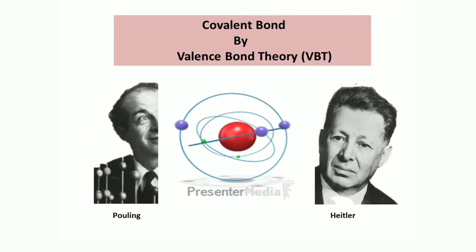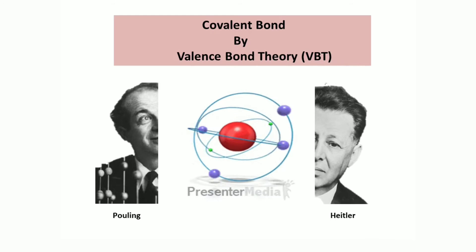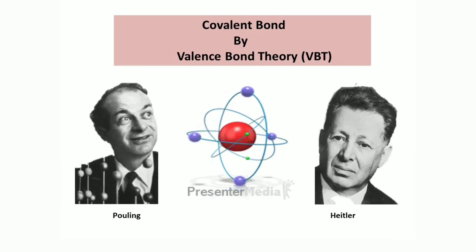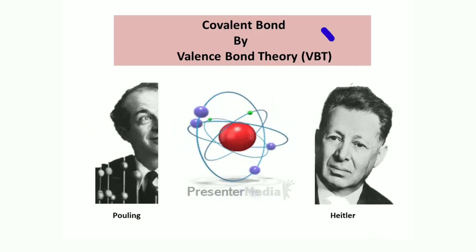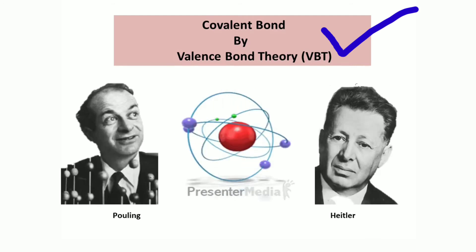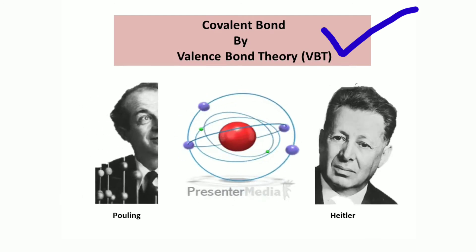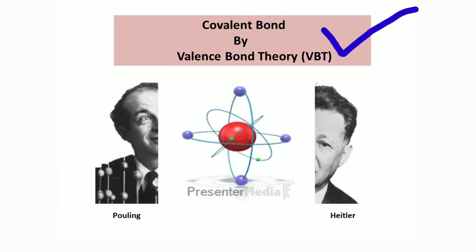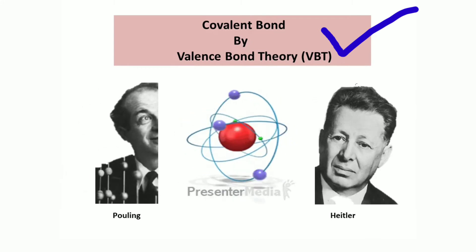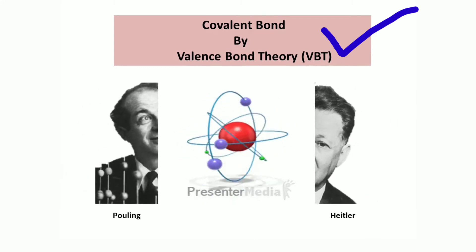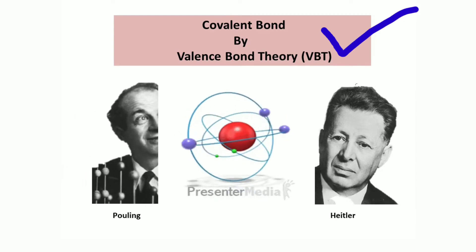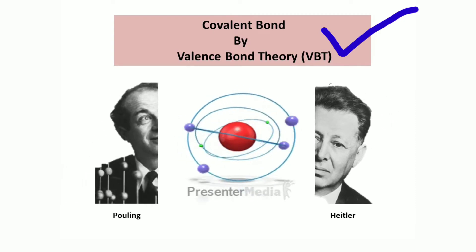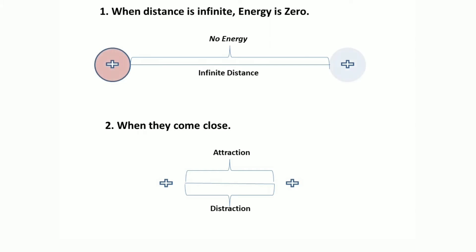Today I will discuss the most important theory behind covalent compound formation, which is VBT or Valence Bond Theory. Scientists Heitler and London first represented the Valence Bond Theory, but later Pauling and Slater corrected some parts of the theory. Here are the conditions of Valence Bond Theory.